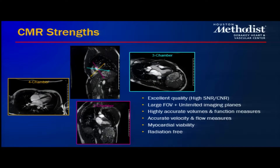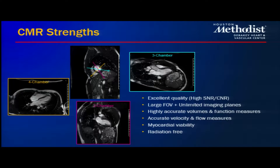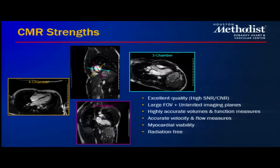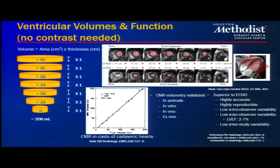In terms of CMR's strengths: it allows high SNR and contrast-to-noise ratio image quality, a large field of view to see surrounding anatomic structures, an unlimited number of imaging planes, and highly accurate volume and function measures. We can also obtain accurate velocity and flow measures, check viability, and this is all with a radiation-free modality.